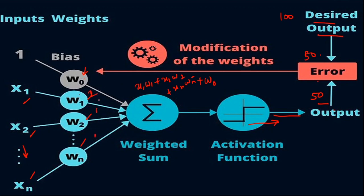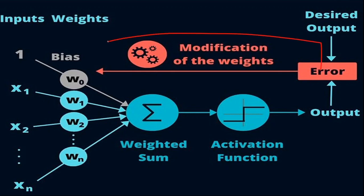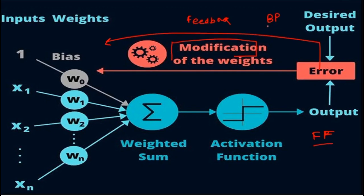When calculating the output in the forward direction, it is known as a feed-forward network. When going back in the reverse direction to modify the weights, it is known as a feedback network. The technique of going back and modifying the weights is known as backpropagation. So there are two important things in a neural network: first is the feed-forward network, and second is backpropagation. We've learned what deep learning is, what a neuron is, and how a single neuron and perceptron works.